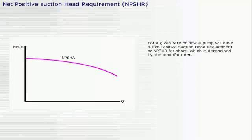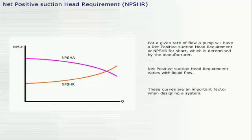For a given rate of flow, a pump will have a net positive suction head requirement, or NPSHR for short, which is determined by the manufacturer. Net positive suction head requirement varies with liquid flow. These curves are an important factor when designing a system.